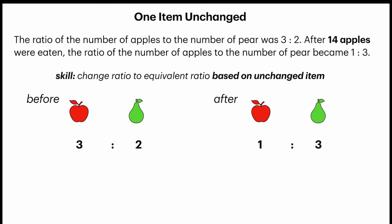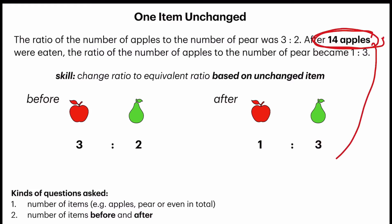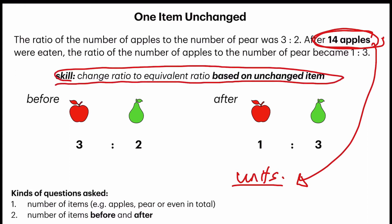What type of questions will they be asking you? They can ask you the number of apples, the number of pears, or even the total. They can also ask about the number of items before and after. The most important thing is the number that's given — 14 apples. You need to refer to it and find out how many units it represents. And remember, the most important skill is to change to the equivalent ratio based on the unchanged item, which in this case is the pears.